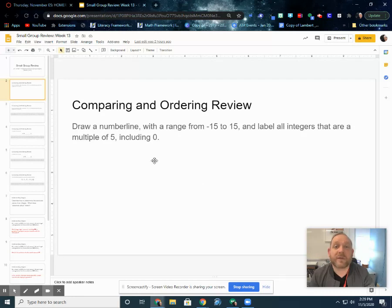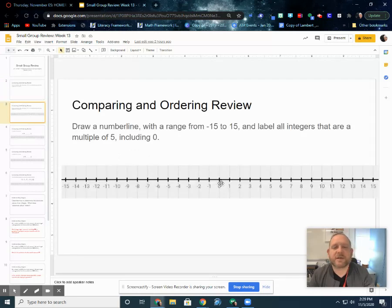All right. Hopefully you did that. Hopefully you paused the video and you drew one out. It should look a little something like this. Now yours, I was being nice to say you only had to put the 5s, the 10s, 15s, and the 0 on there. So you've got -15 all the way up, counting backwards to 0. And then on this side you have your positive integers, 1 through 15.